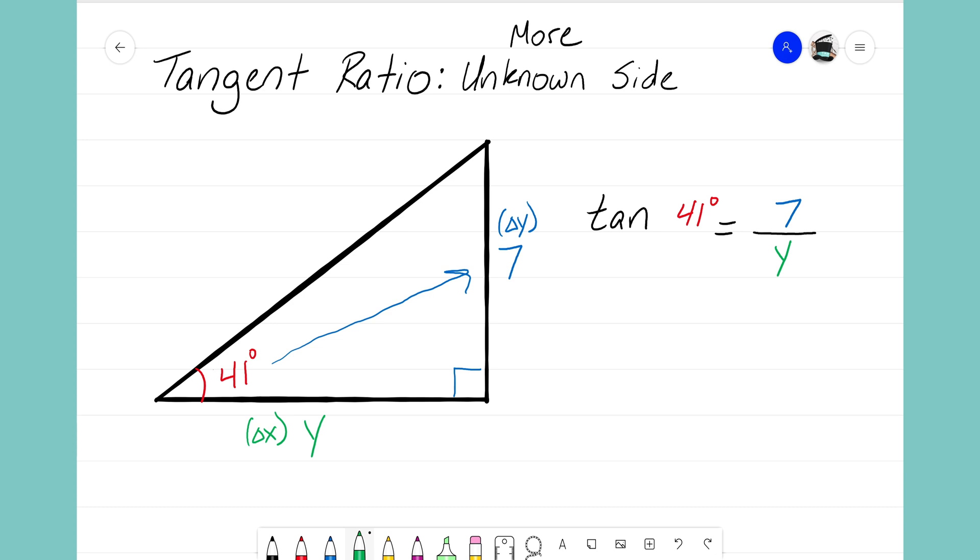This is going to follow the same path that our other video started with. We're going to put the tangent of 41 degrees over a value of 1. We do that so now we have two fractions equal to each other. And our next step is that we can cross multiply these. So I'm going to multiply Y times tangent of 41, that ends up becoming Y times tangent of 41 degrees. That's equal to 7 times 1, so on this side of the equal sign I'm left with just a 7.